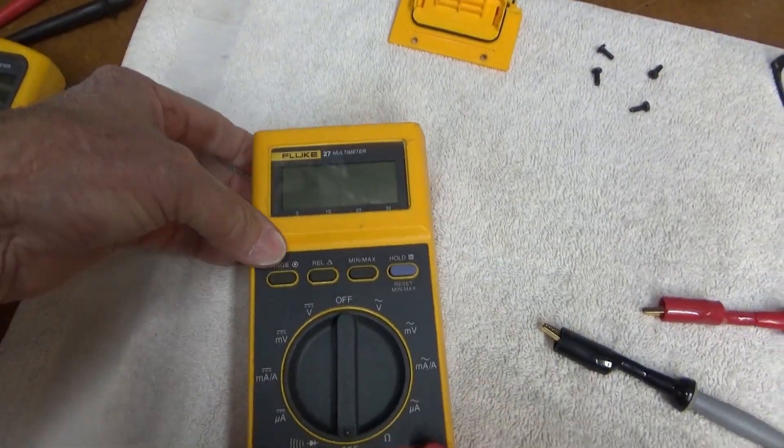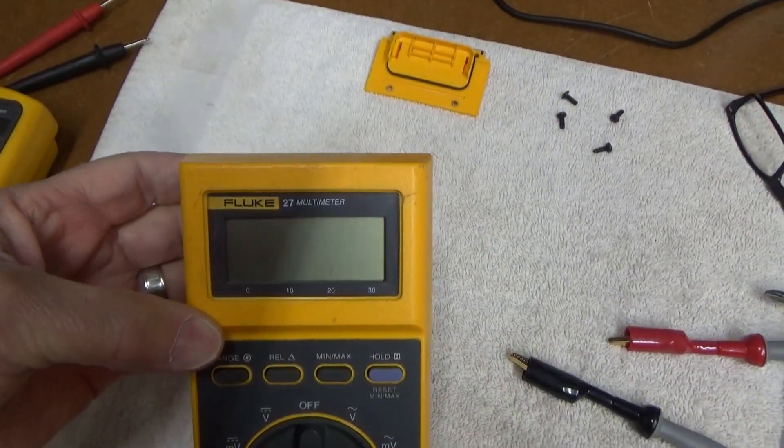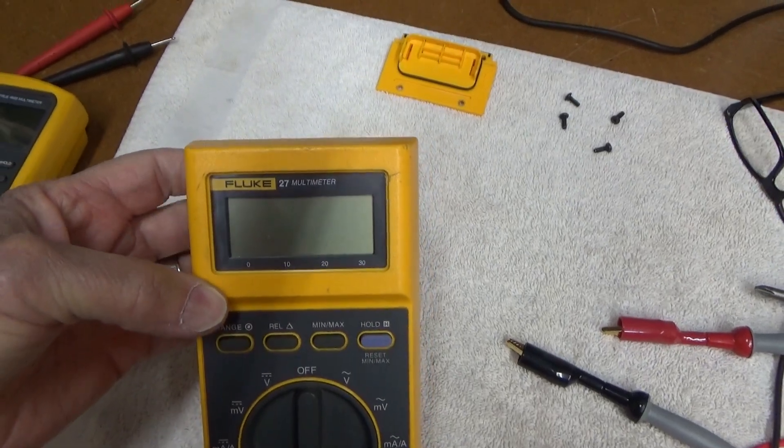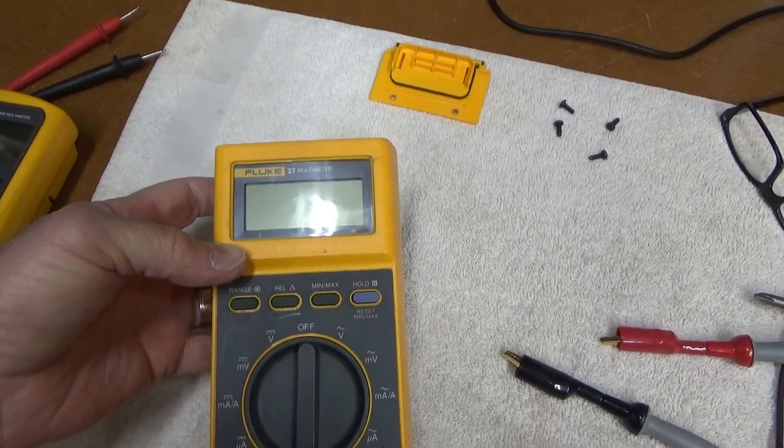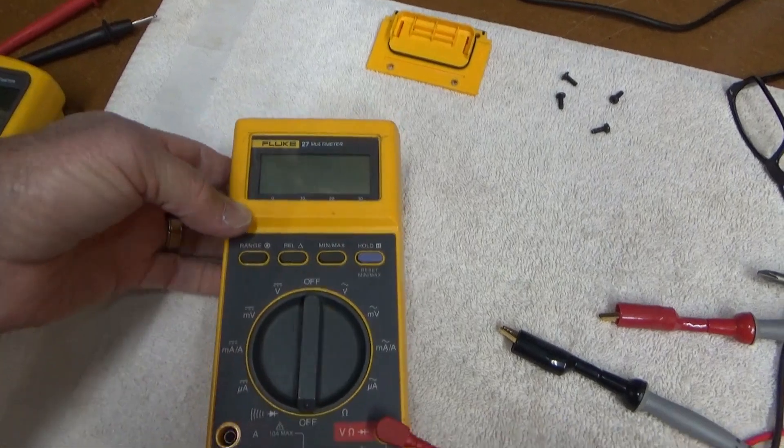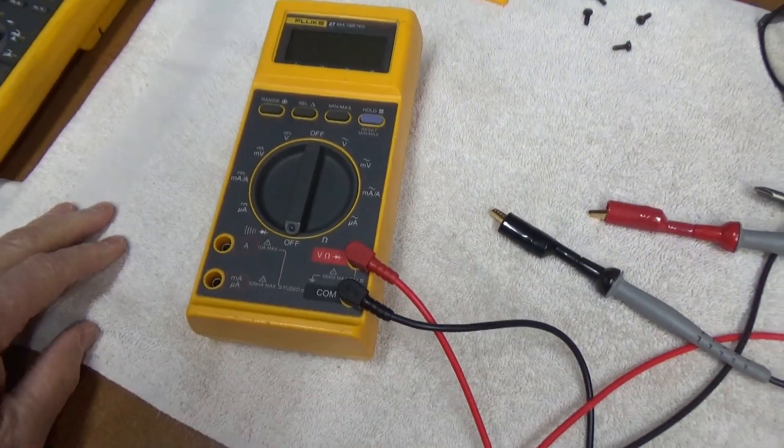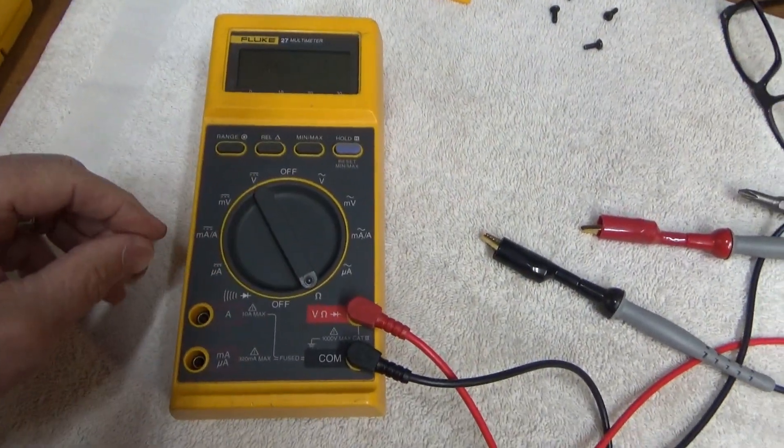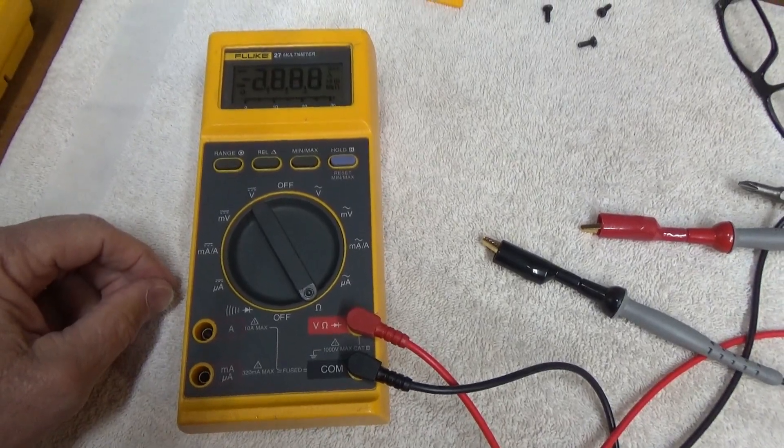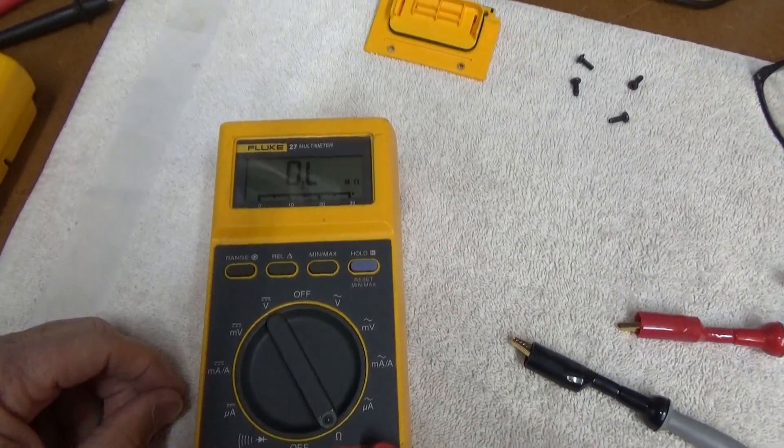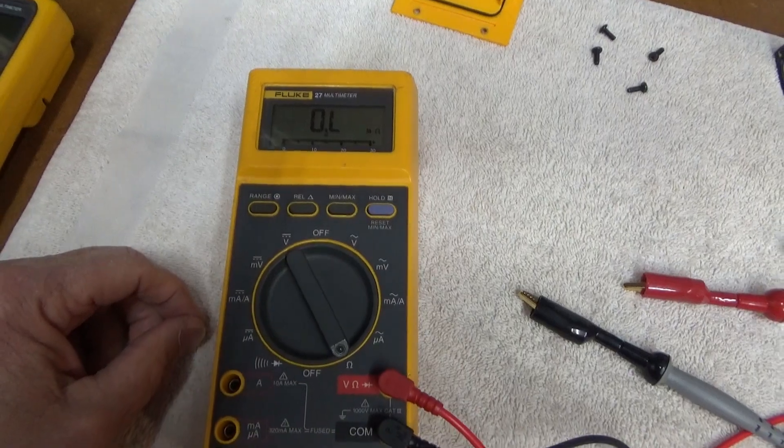Here's a new purchase that I have made, this Fluke 27 multimeter used on eBay for $70 with free shipping. It's got a problem. That's the first time I've turned it on and it made that noise.